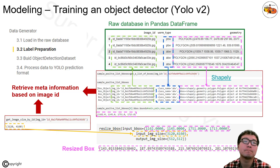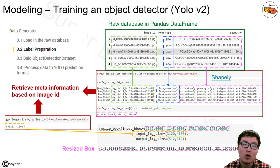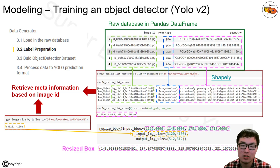Before we can train the object detector, we need to prepare labels. All the information was given in CSV format, which we read in as a pandas DataFrame. We write code to search for how many boxes, their classes, and locations based on image ID. These polygons are given as strings, but instead of working with polygons directly, we work with bounding boxes.